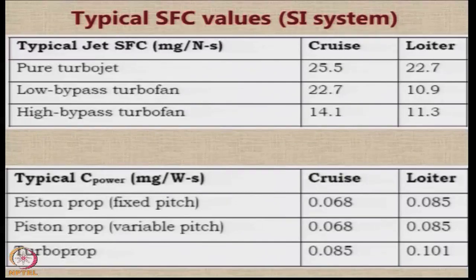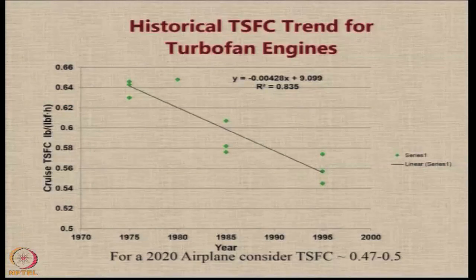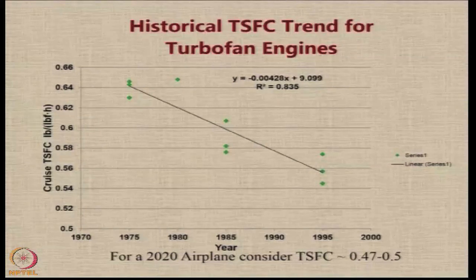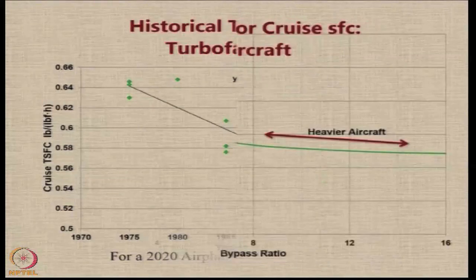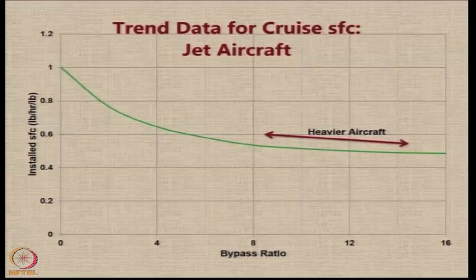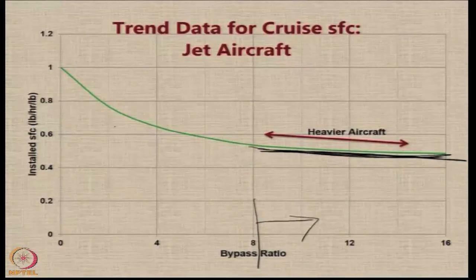This particular chart is quite useful to start off. It has come from the Ramos textbook, where Professor Scott Eberhardt has plotted the historical TSFC for turbofan engines. You notice that consistently the TSFC is reducing, indicating that as the years progress SFCs are coming down. But if you look at the data for cruise SFC for jet engine aircraft, we see that we are slowly reaching some kind of flattening if you have a bypass ratio beyond 8. Up to bypass ratio 8 they slowly come down; after bypass ratio 8 to 10 they start becoming flat.